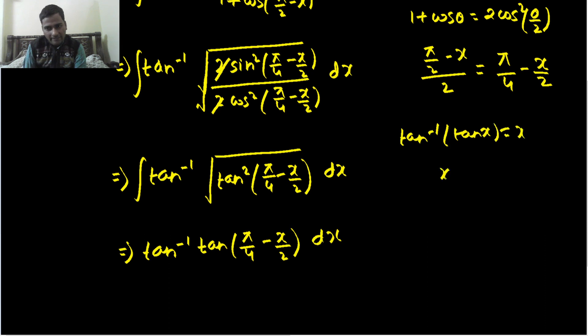Now what to do? We know tan inverse of tan x is x only when x is between -π/2 to π/2. Here, x is whatever is inside tan. Now inside tan, this time we have this whole expression π/4 - x/2. So we want that π/4 - x/2 needs to be between -π/2 to π/2.